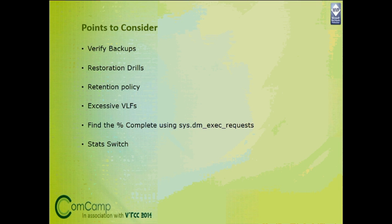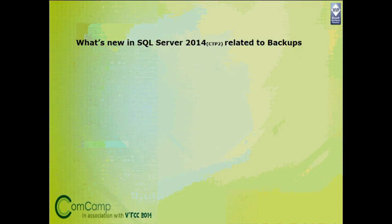Smart backup takes care of everything based on workload and throttles backups accordingly. If you have a very dynamic database that is changing every second, it will create log backups based on the data being changed. But for a database on the same instance that only changes every week, it will skip unnecessary backups. It also has built-in intelligence for naming backup containers and files, and detects user actions on the database.